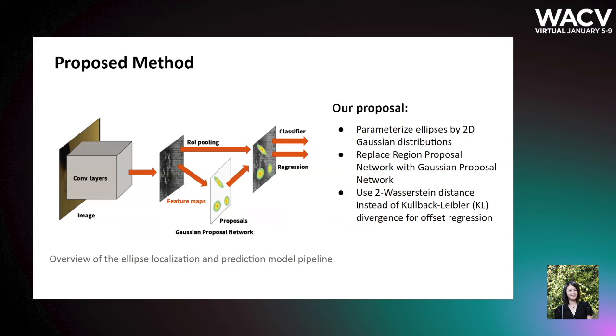Feature maps corresponding to proposed regions are obtained through the ROI pooling branch. The feature maps and proposals are finally fed into the ellipse regression and classification branch for final offset prediction with Wasserstein distance as the loss function.